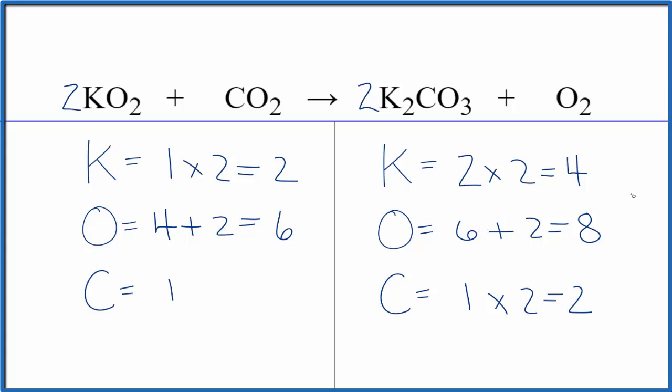We might as well just fix the potassium atoms and then look at the oxygens. If I change this number here to a four, now I'd have the one times four, so I'd have four potassium atoms. Those are balanced. I do need to update the oxygens. So I have four times two is eight, plus two here. So now I have ten.